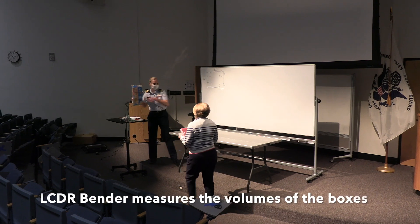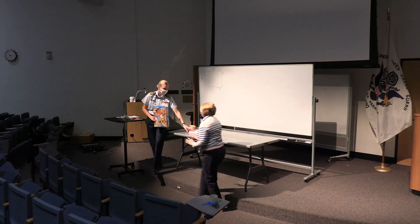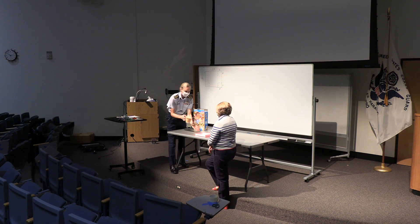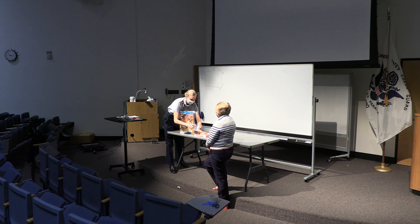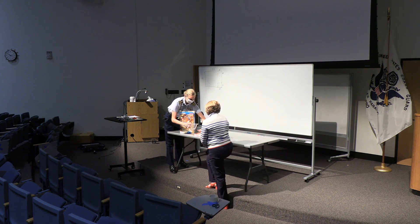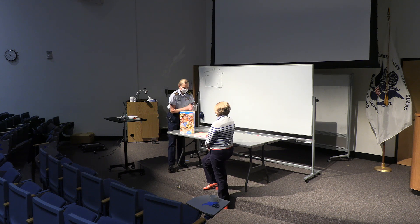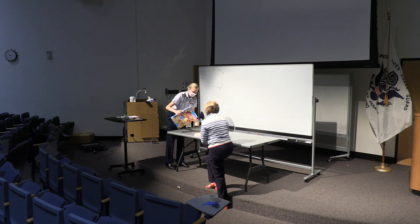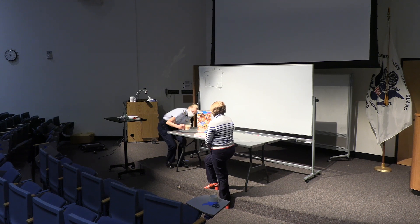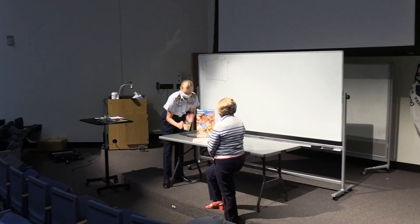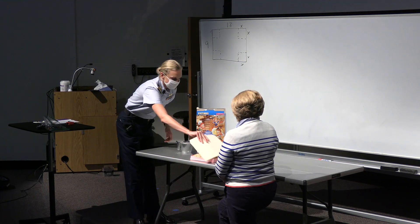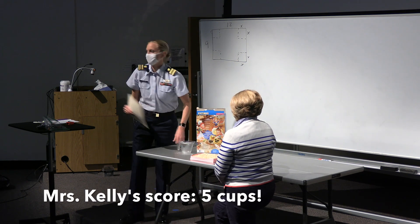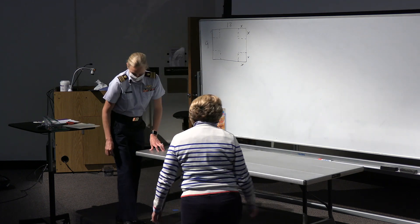We're measuring Mrs. Kelly's pink box. It's looking like we're going to get well more than two cups. We're getting four cups in here — pretty good volume. Let's add a little more. That's five. We got basically five cups in there. Mrs. Kelly, you can stand over here next to yours. Thank you.